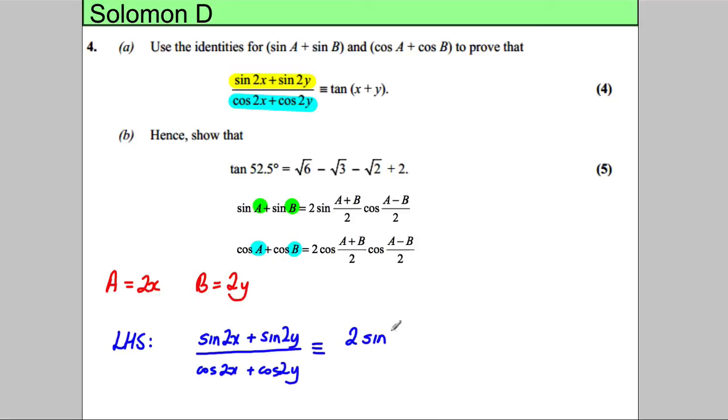Well, using this formula here, we could change it into 2 sine of A plus B divided by 2. So 2X plus 2Y divided by 2, and it would have a cos of 2X plus 2Y over 2, so 2X take away 2Y over 2, like that.